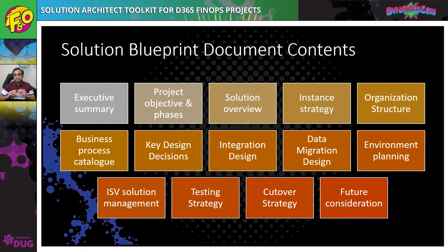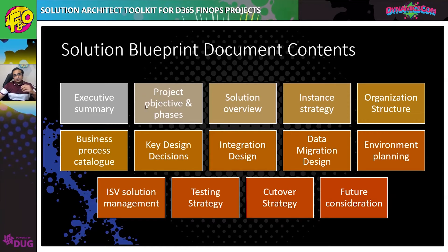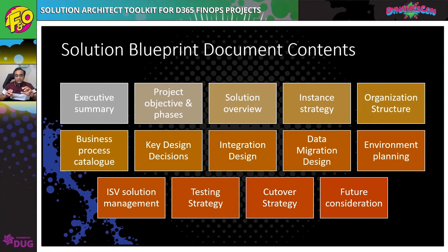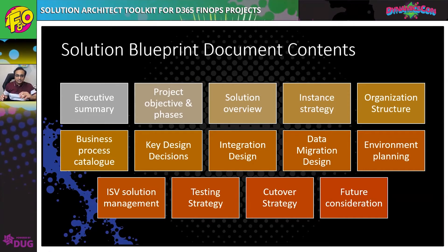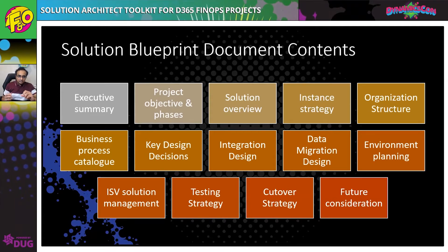Let's talk about the solution blueprint document. It is a document prepared towards the end of your design phase that captures key objectives. The executive summary section is where you summarize the key findings of the design phase. It is meant for project sponsors, who won't go into line-level detail but will want to understand the project objective, how the solution fulfills the vision, and what the key design considerations are.